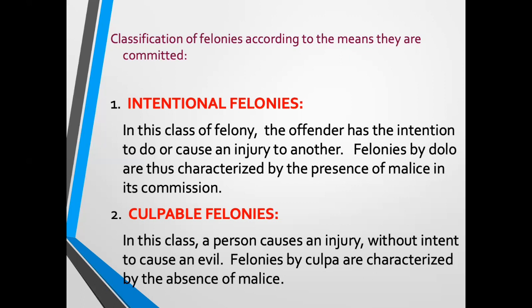Article 365 punishes acts by imprudence or negligence which, had they been intentional, would constitute grave, less grave, or light felonies. There are crimes, however, which cannot be committed through imprudence or negligence — such as murder, treason, robbery, and malicious mischief. When you commit these crimes, they are necessarily malicious and intentional, because their elements show there is intent: in murder there is intent to kill, in treason intent to betray your government, in robbery intent to gain, in malicious mischief intent to destroy the property of another.